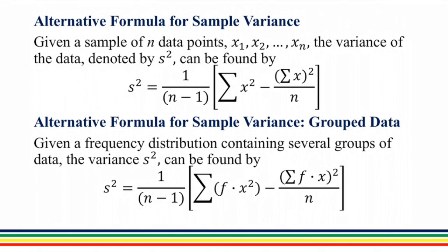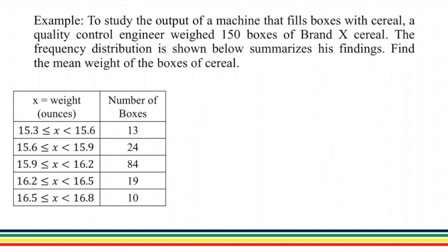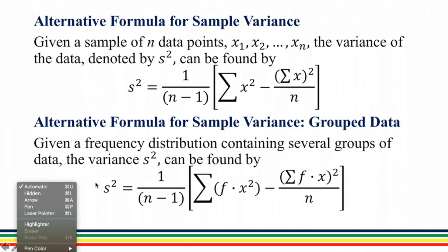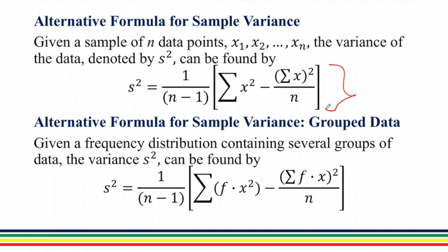Alternative formula for sample variance. Given a sample of n data points x1, x2, up to xn, the variance of the data denoted by s squared can be found by s squared equals 1 over (n minus 1) times summation of x squared minus (summation of x) squared over n. This is the alternative formula for sample variance. And this is the formula for sample variance for grouped data, where x is the midpoint of the group, f is the frequency, and n is the summation of all the frequencies.